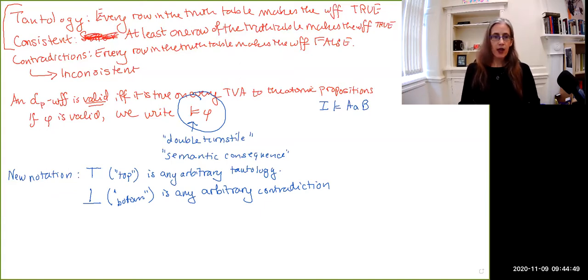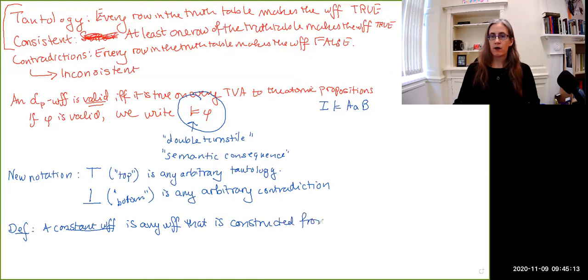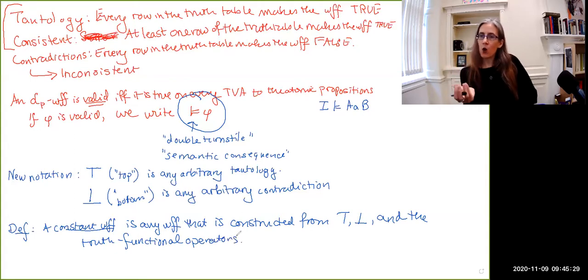So this gives us a notion of a constant formula. We will define a constant well-formed formula phi as any well-formed formula that is constructed from top, bottom, and the truth functional operators. So negation, conjunction, disjunction, and implication. So even though the arbitrary tautologies and arbitrary contradictions are complex formulas, we can treat them as if they are atoms.